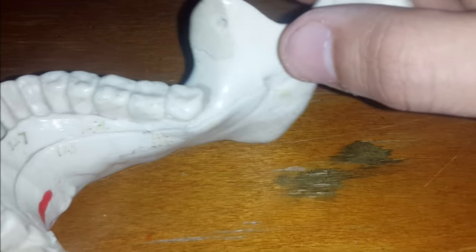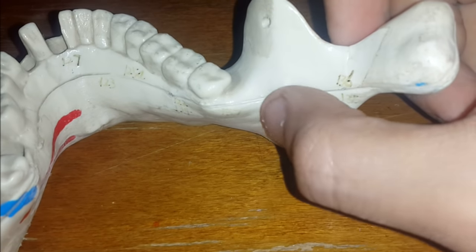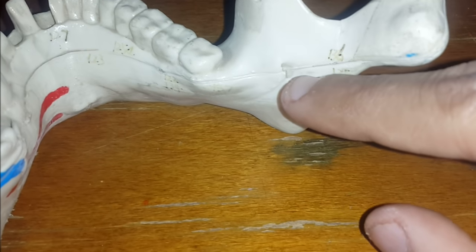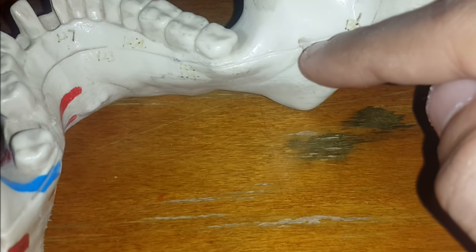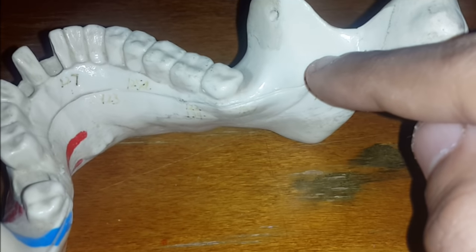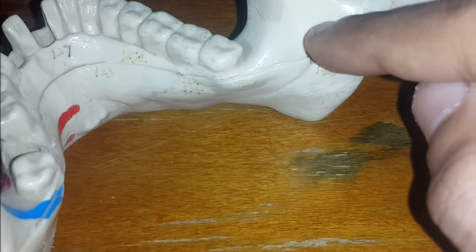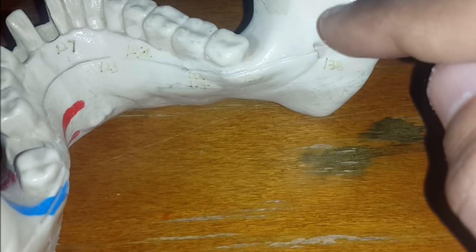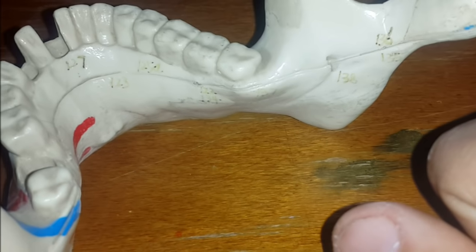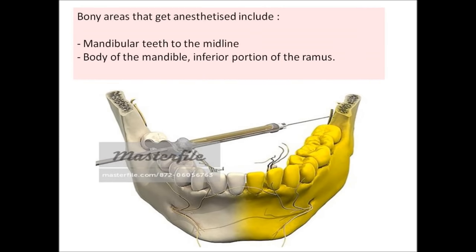The target of the block is to place local anesthetic just above the mandibular foramen. This foramen leads into the mandibular canal, and the inferior alveolar nerve enters into this foramen. By placing local anesthetic just above the mandibular foramen, we ensure that it bathes the inferior alveolar nerve as well as the lingual nerve in most cases.